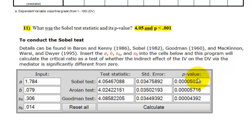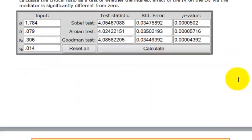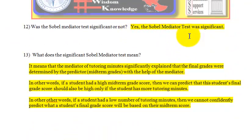That is definitely a significant Sobel test. What does that mean? It means the mediator — tutoring minutes — can significantly explain the final grades in the context of the predictor — midterm scores. If a student had high midterm grade scores, we can predict their final grade scores as long as they also have a high number of tutoring minutes. Conversely, if a student had a low number of tutoring minutes, we cannot confidently predict whether their final grade can be based on midterm scores. That's what a mediator is in a multiple regression model.